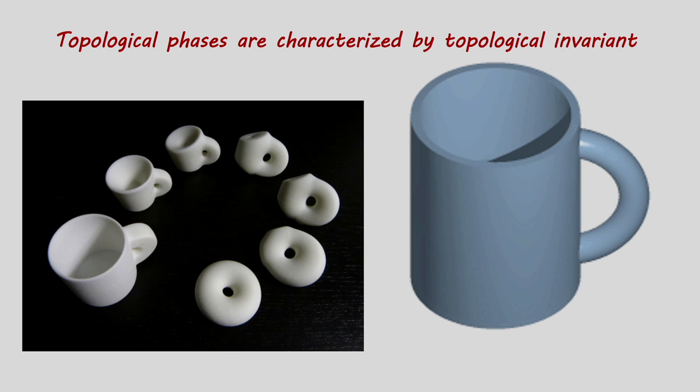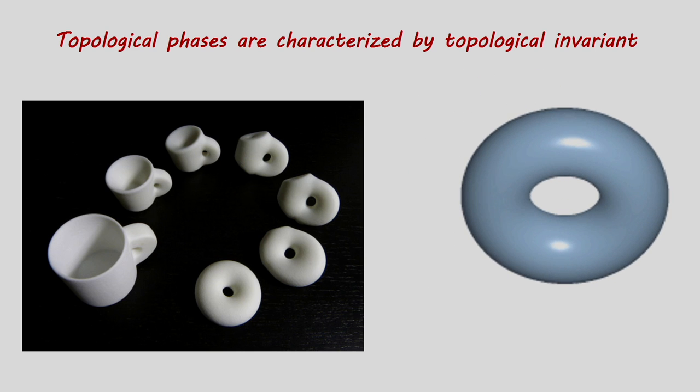If you need to puncture or tear it, you are not getting back the same system. In terms of the Hamiltonian, this means some energy levels are crossing the Fermi energy — equivalent to puncturing or tearing. You must maintain the number of levels below the Fermi energy. If this number remains the same and there is a gap, the system is topologically non-trivial.